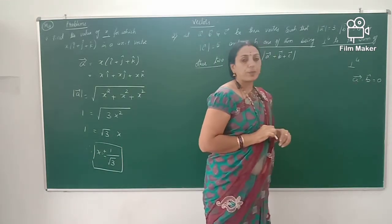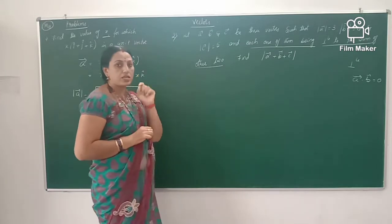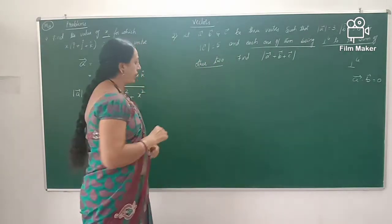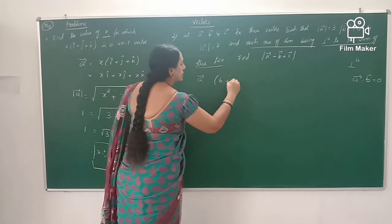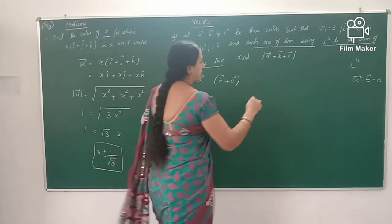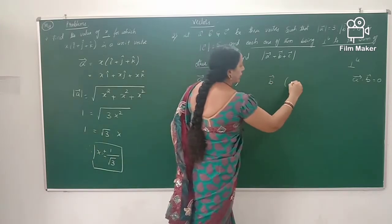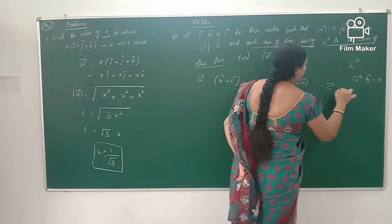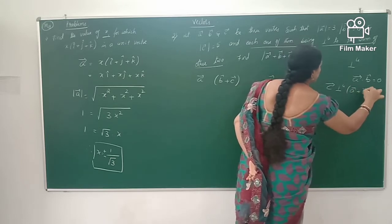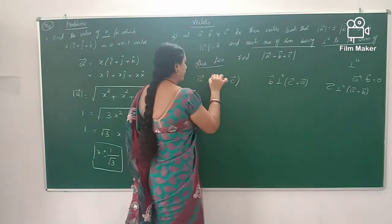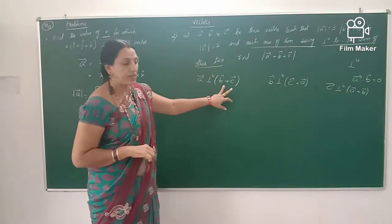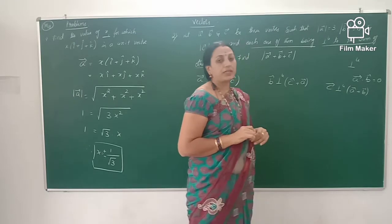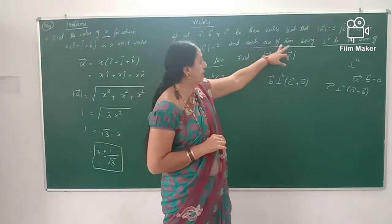By using that condition, a and b perpendicular means a dot b equals 0. Similarly, the possibilities are: a is perpendicular to b and c, b is perpendicular to c plus a, and c is perpendicular to a plus b. These are the different conditions — a is perpendicular to b plus c, b is perpendicular to c plus a, and c is perpendicular to a plus b. This is a conclusion of the given statement.